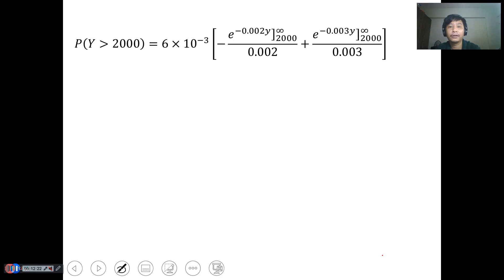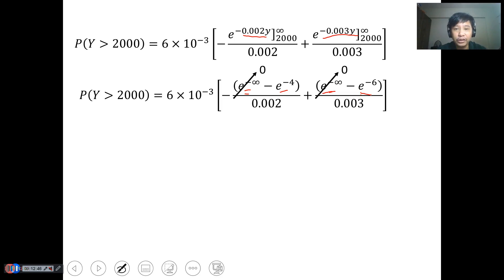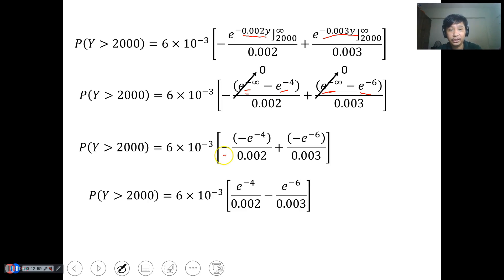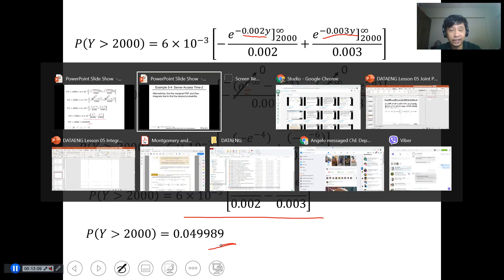From there, we can substitute back u and v to evaluate in terms of y. By substitution, this becomes negative infinity minus e^(-4). This is negative infinity minus e^(-6). Both e^(negative infinity) equal 0, so we have negative e^(-4) and negative e^(-6). Distribute the negative. Evaluate it. The answer is 0.049986. That is the probability.